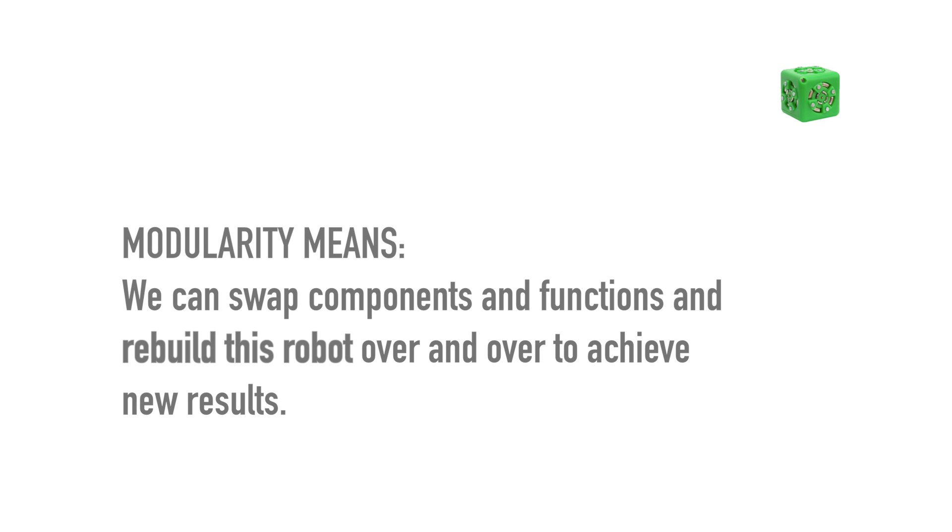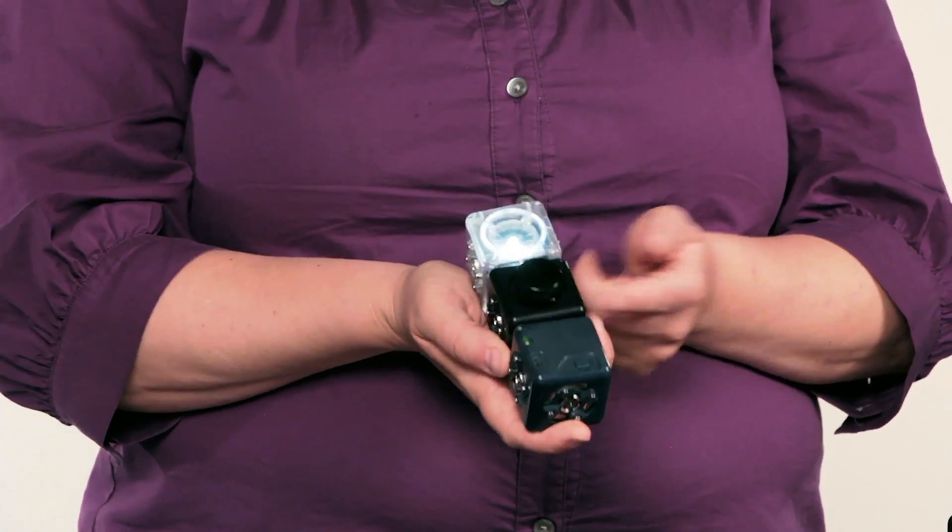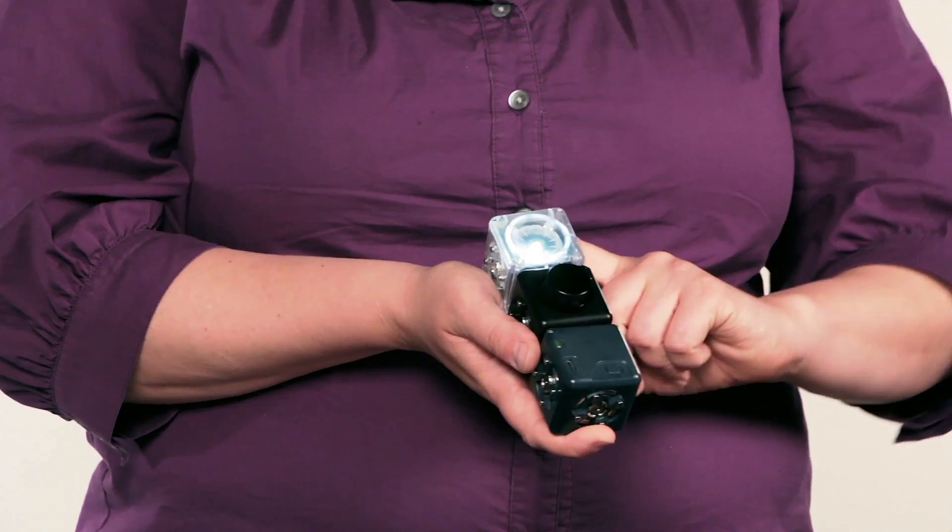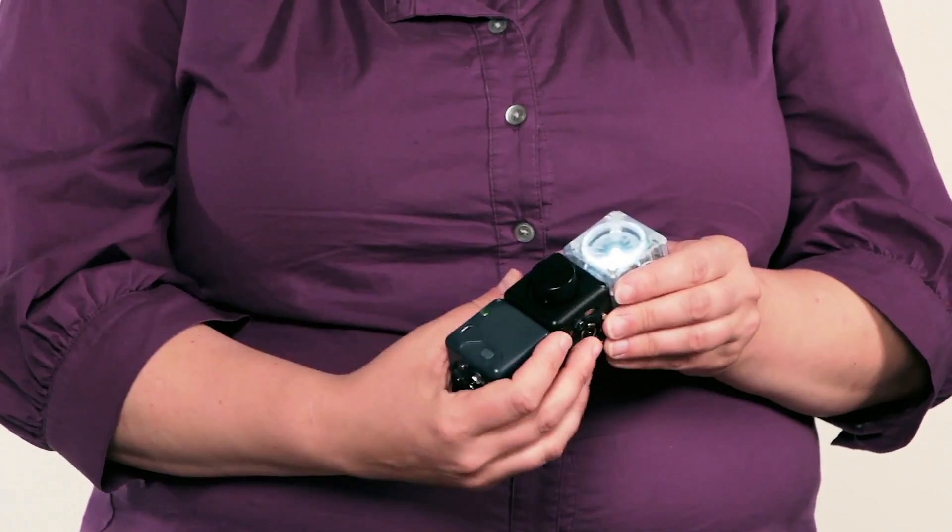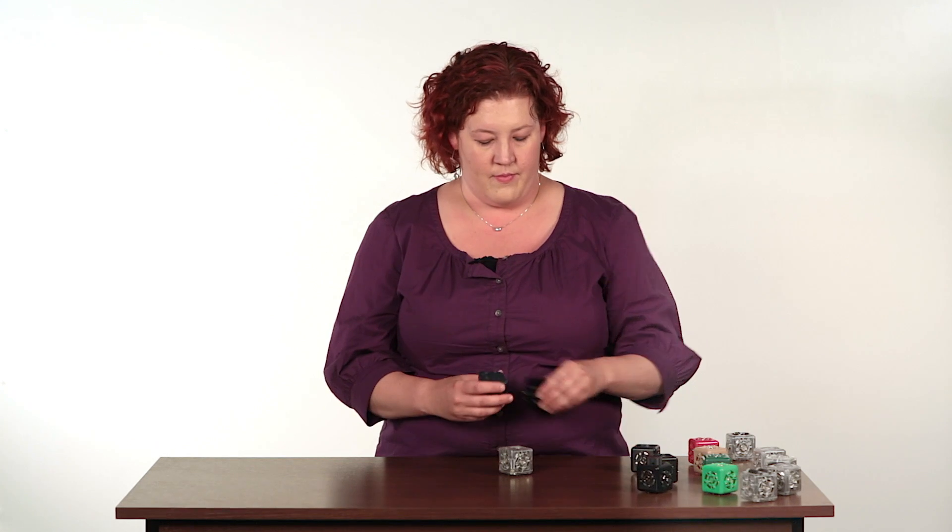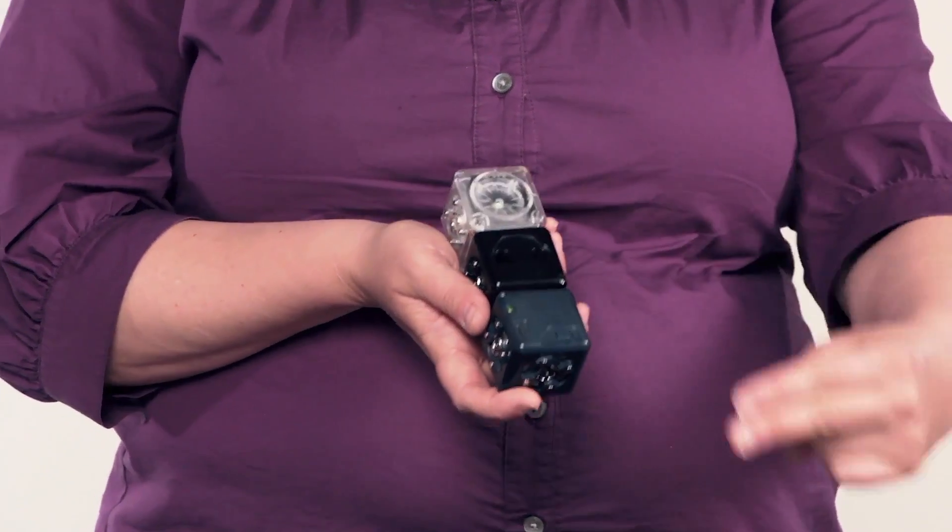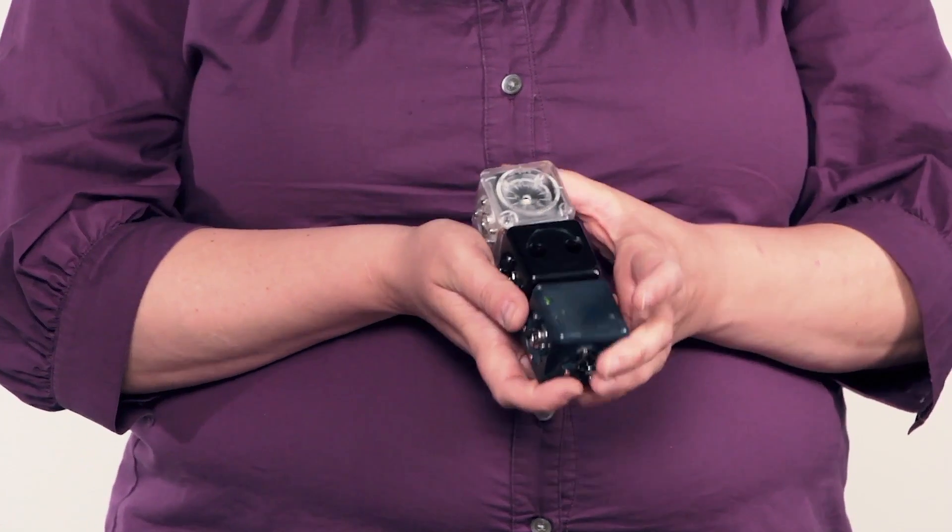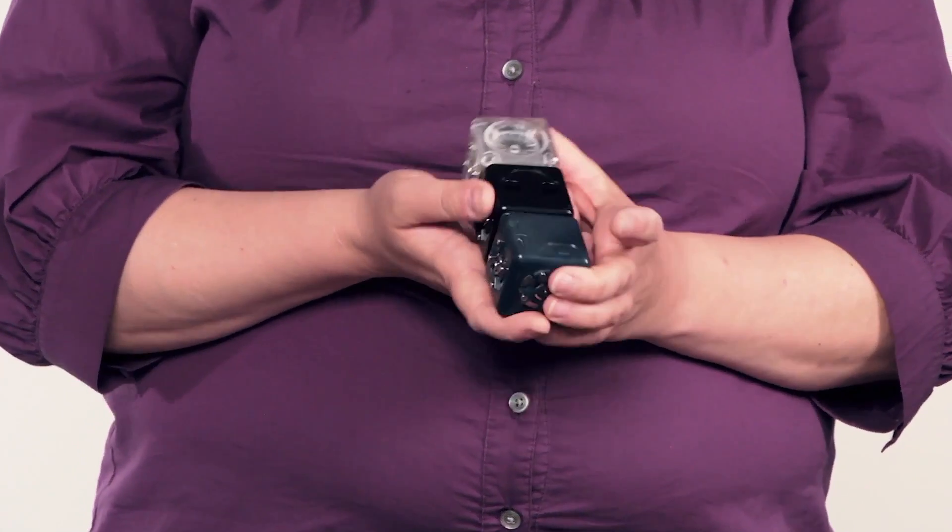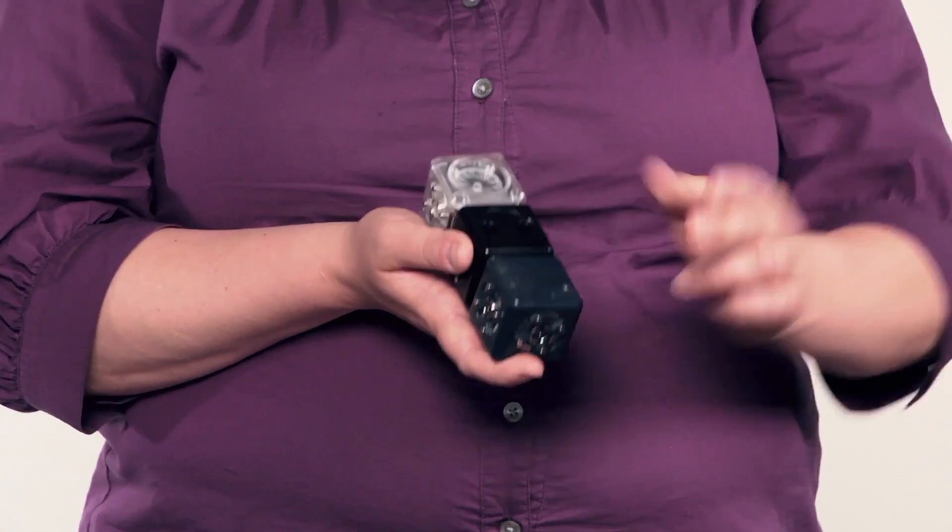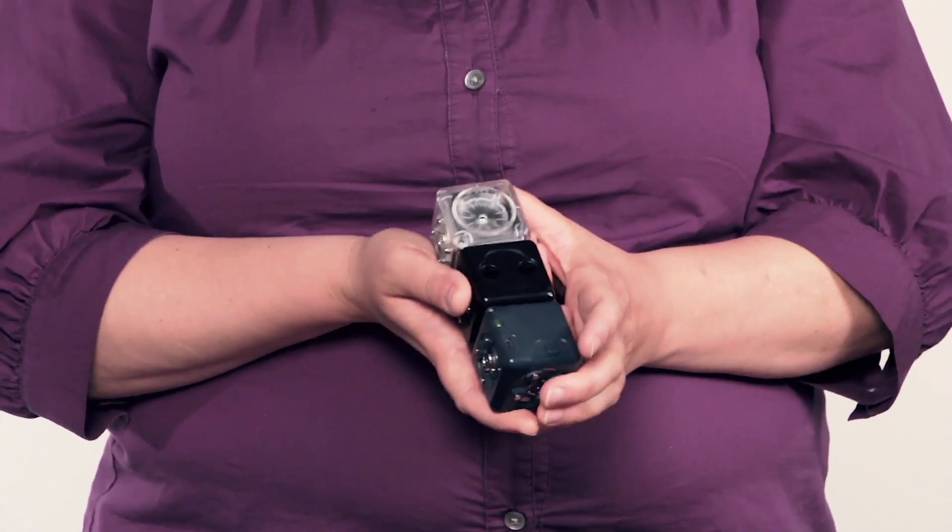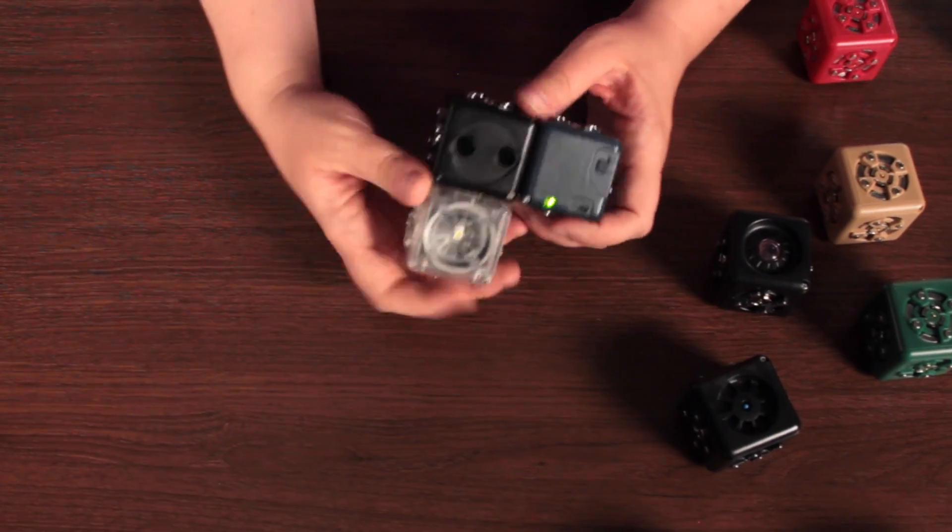So I can rebuild these cubes quickly and in many different orders. Modularity also means that we can swap components or functions. We'll always minimally need the battery, a black sensing cube, and a clear action cube, but I could swap this sense for a different one. The light will still get bright and dim, but what controls the output value has now changed, because we changed the input. It's now a distance sense, and it's using what objects are close and far, right now in my hand, as its input.